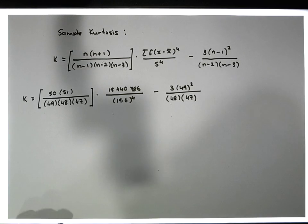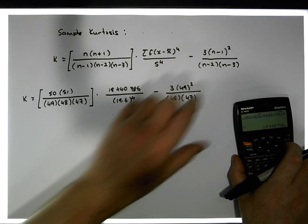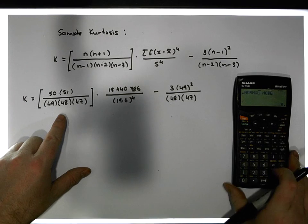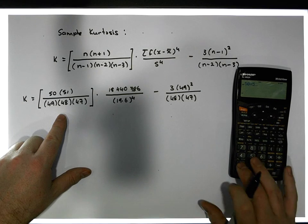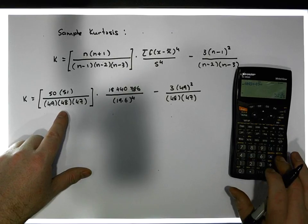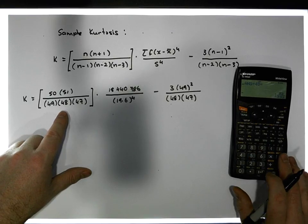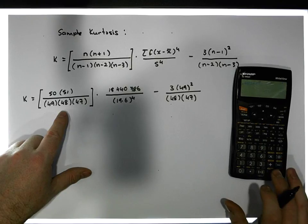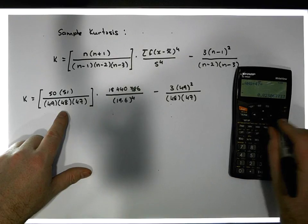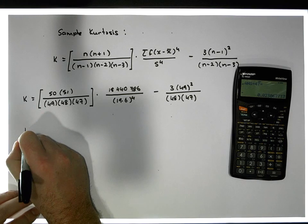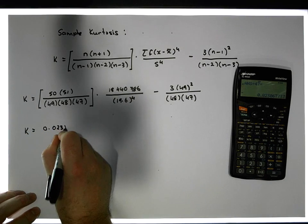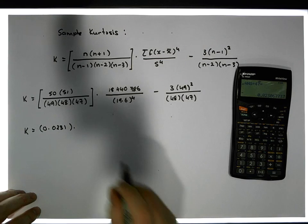Now we compute that first factor: 50 times 51, divided by 49, divided by 48, divided by 47. This gives us a value of 0.0231 to four decimal places. So k equals 0.0231 multiplied by the remaining factor.